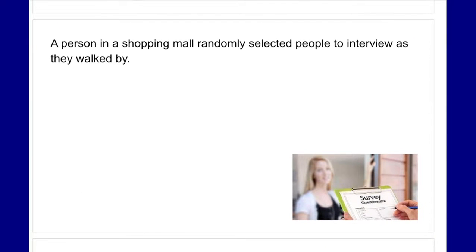In the next example, a person in a shopping mall randomly selected people to interview as they walked by. Where is the sampling bias here? We don't know exactly how many people are being surveyed, but because we're in a mall there are probably enough people to create a large enough sample size. It does mention that we are randomly selecting people, so we can assume we're doing a good job at randomly selecting them.